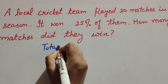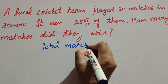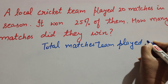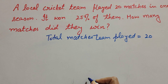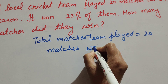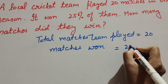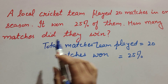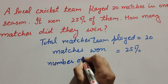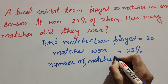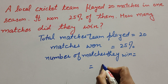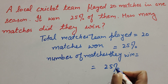The total matches the team played is equal to 20 matches. The matches won is equal to 25%. We need to find how many matches they won. The number of matches they won equals 25% of the total matches they played, which is 20.